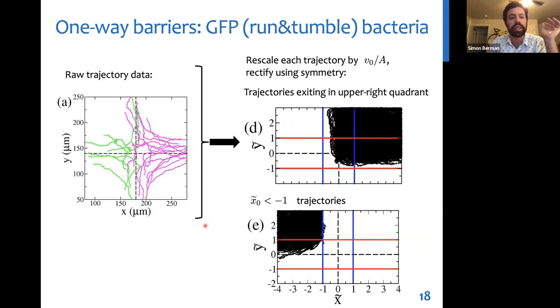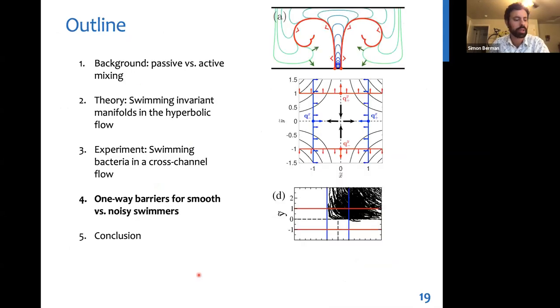Now we turn to the data from the GFP wild type swimmers. Here we can see their trajectories are much more erratic because they can independently change their swimming direction. But amazingly, when we apply the same rescaling and rectification procedure to the trajectories, we see that they still respect the one-way barrier property of the swim edges, namely all trajectories that exit right are bounded by the swim edge on the left and everything that begins outside of the swim edges for the most part remains on the same side for all time. And this is a bit of a puzzle because our theory was formulated for deterministic swimmers that aren't experiencing these large random fluctuations in their swimming orientation.